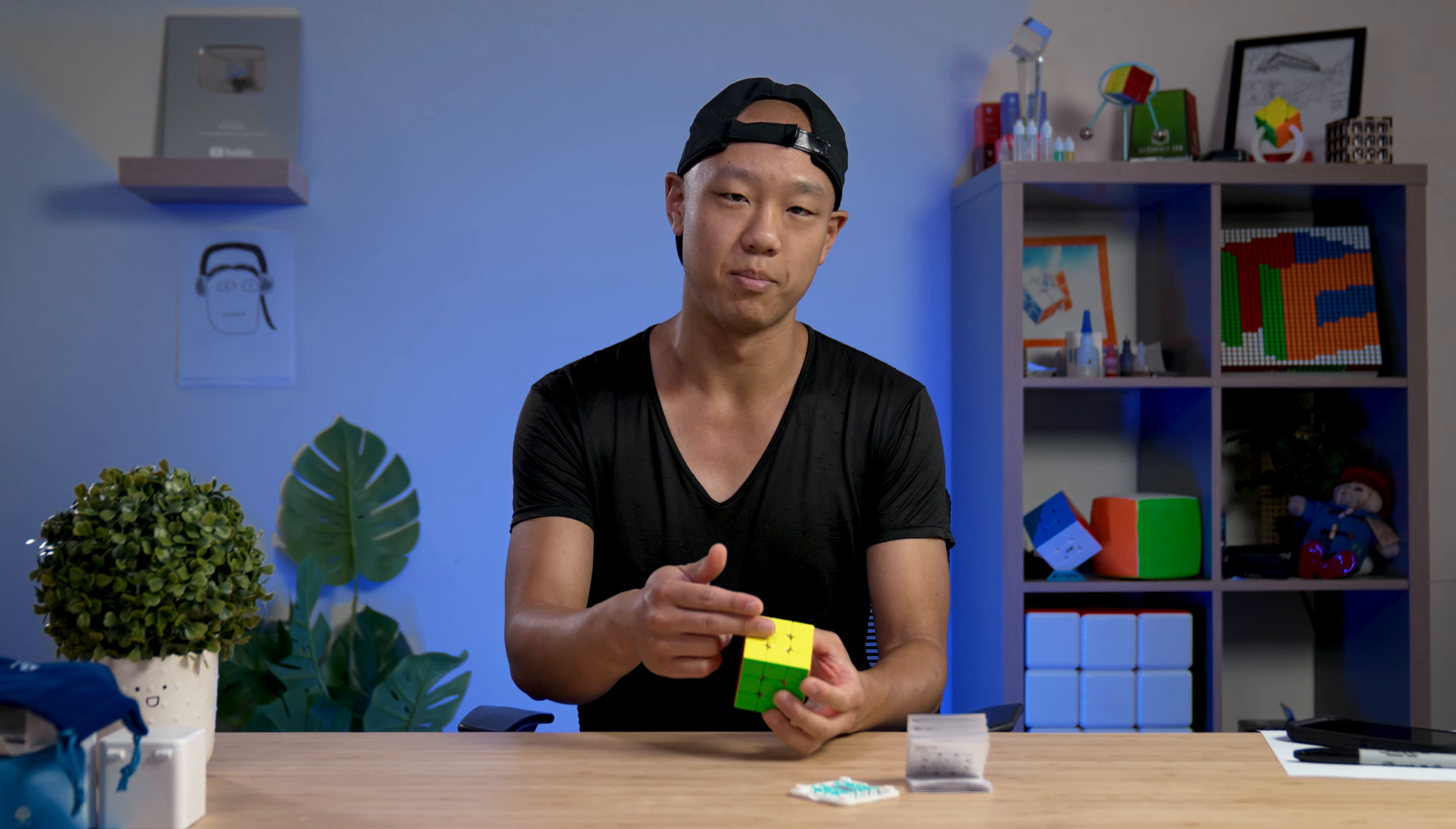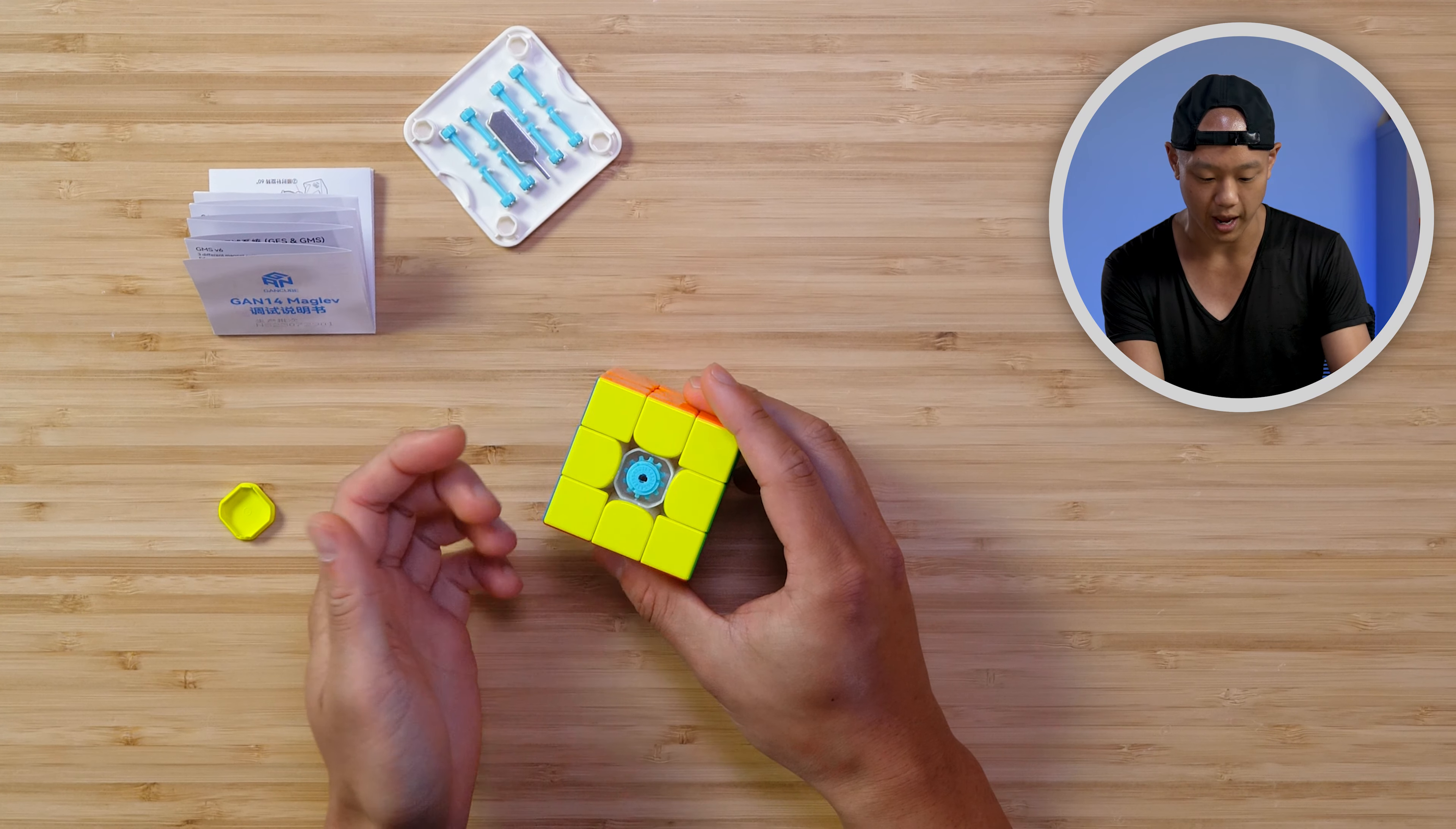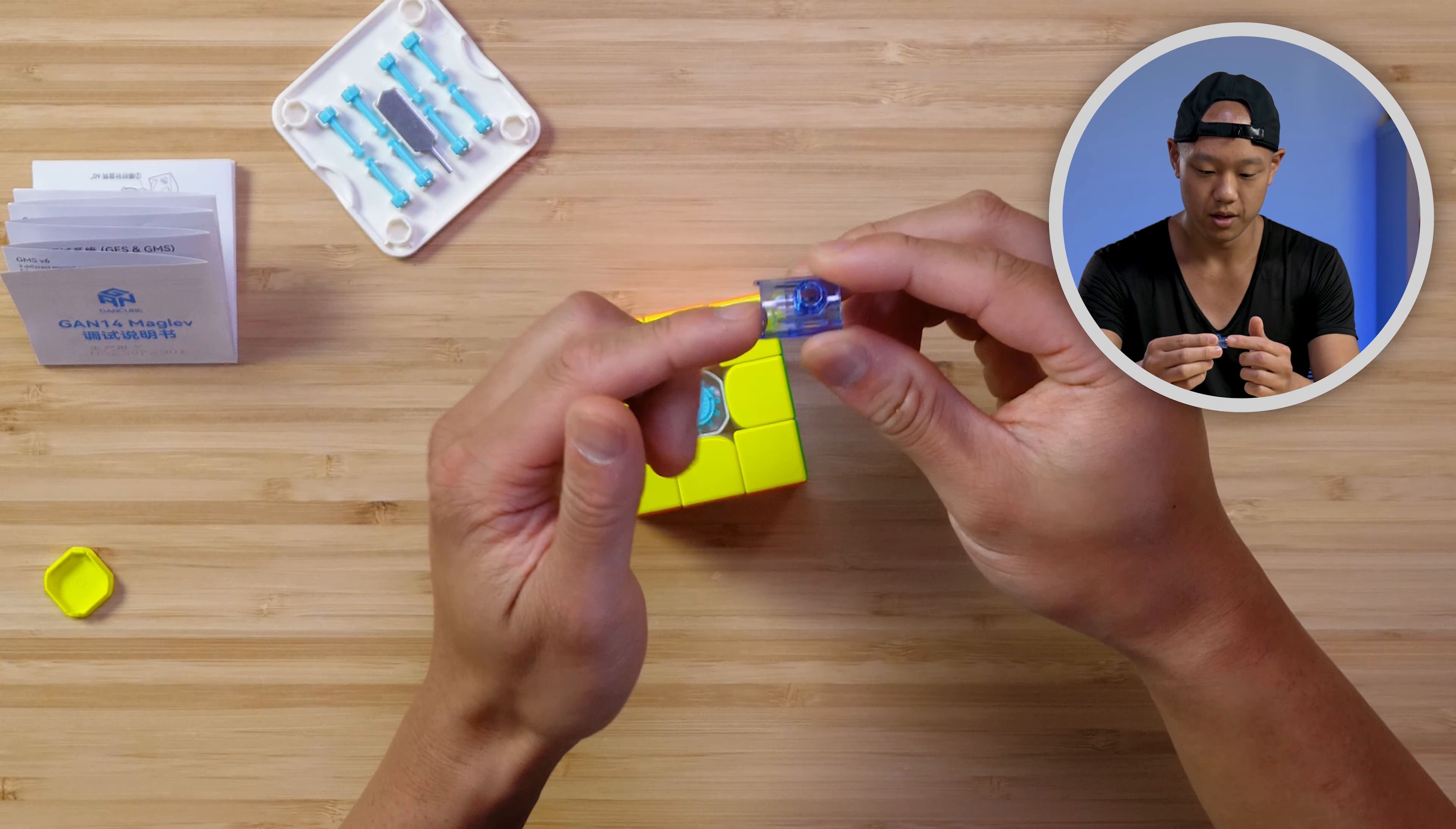Now let's take it apart and look at all the tech. I think there are two places you can adjust the cube. One is inside the cube and the other is under the cap. Sorry, I forgot the GAN fire hydrant. This is a tool you can use to adjust the centers.